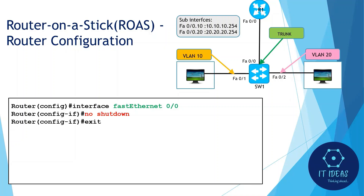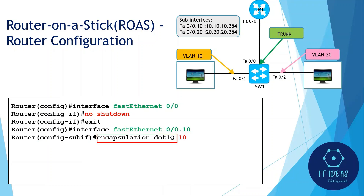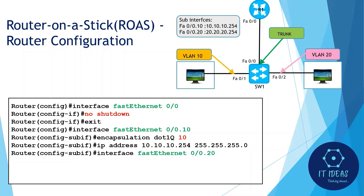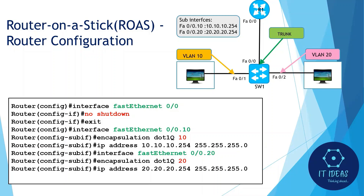Create sub-interface fa0/0.10 for VLAN 10. The 'encapsulation dot1q' command enables trunking on the interface, and the VLAN ID number must match. Then assign an IP address in the VLAN 10 subnet — VLAN 10 hosts will use this IP address as their default gateway. Similarly, create sub-interface fa0/0.20 for VLAN 20 and assign an IP address in the VLAN 20 subnet.